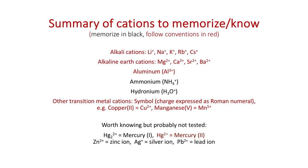Summarizing cation nomenclature: alkali cations are all plus ones—lithium group loses one electron. Alkaline earth cations are all plus twos, two away from the noble gas count. For sodium, it's always plus one, so NaCl is just sodium chloride, not sodium(I) chloride—the charge is understood. We don't need Roman numerals unless we have a transition metal where the charge is unknown. Aluminum is always three plus based on its periodic table placement.